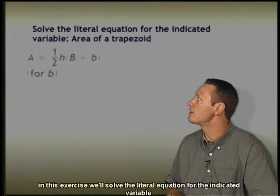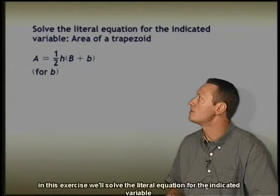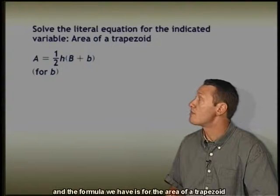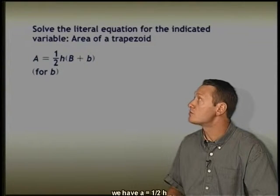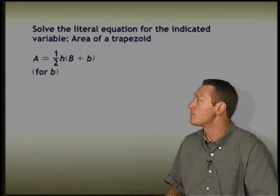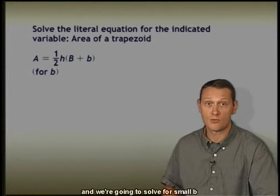In this exercise, we'll solve the literal equation for the indicated variable. The formula we have is for the area of a trapezoid: A equals one-half h times the quantity capital B plus small b. We're going to solve for small b.